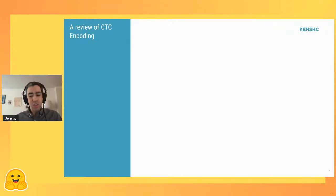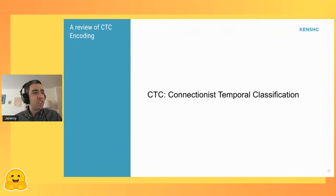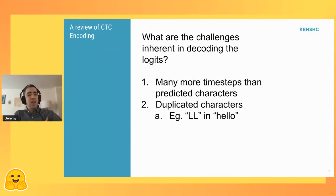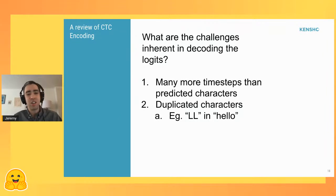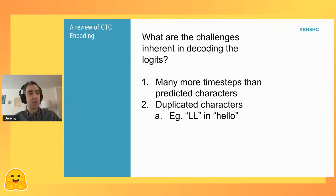Now into CTC encoding. CTC stands for connectionist temporal classification. There are challenges in decoding these logits: typically you'll have many more time steps than predicted characters, because people speak at different speeds. Also, in actual human text you'll get things like duplicated characters — for example, in the English word 'hello' you have two L's. So you have repeated things from having many time steps, but also actually duplicated characters.